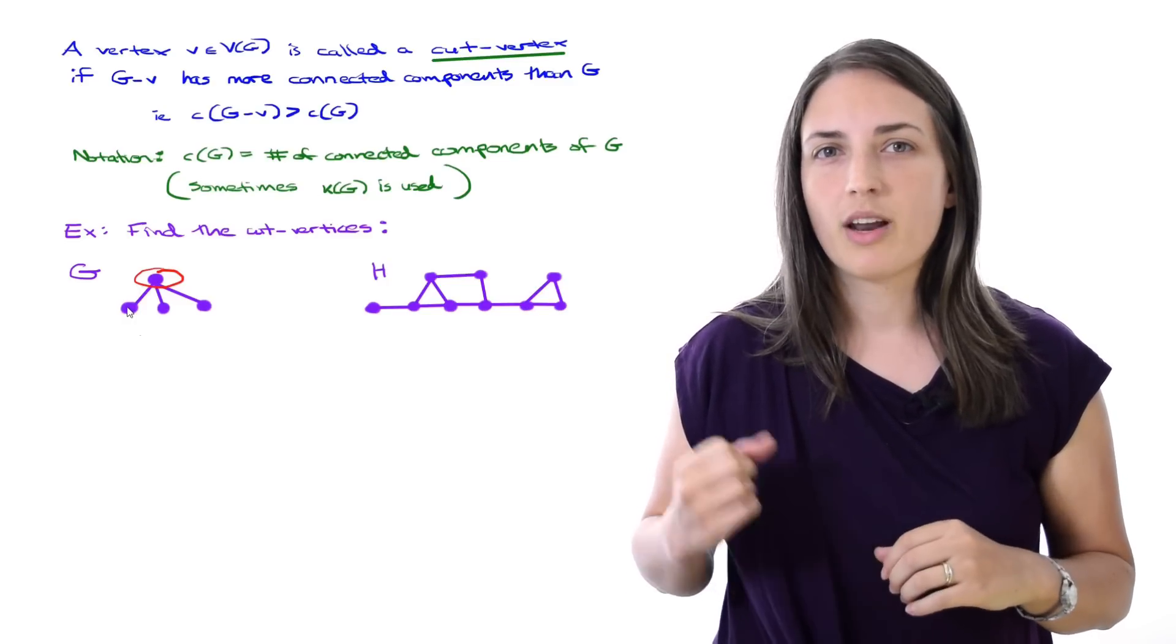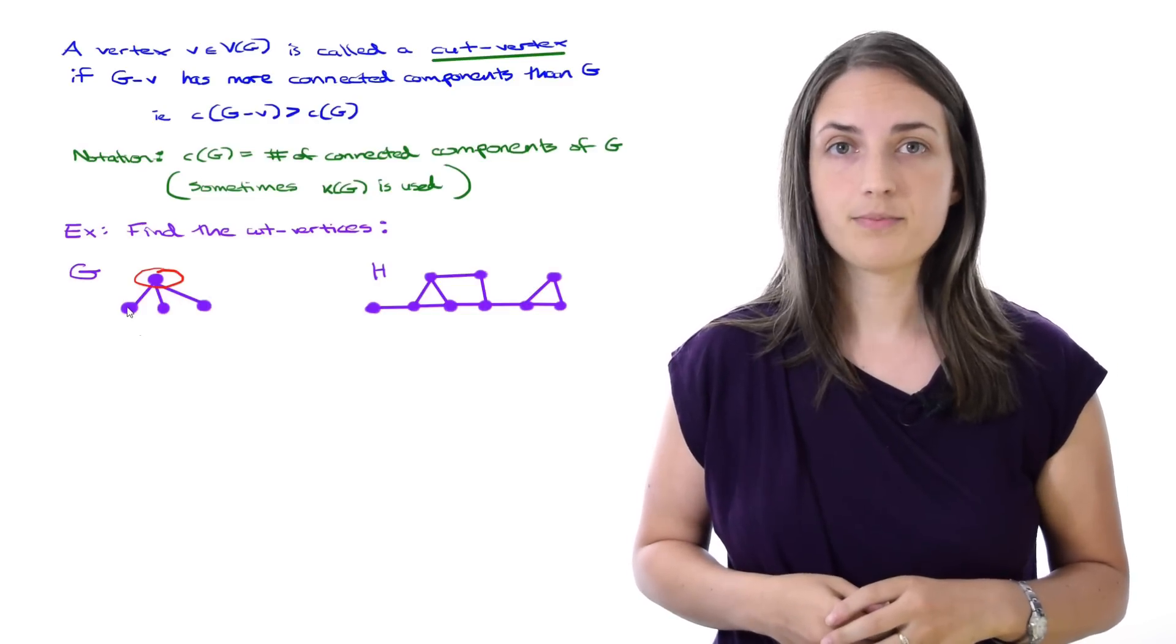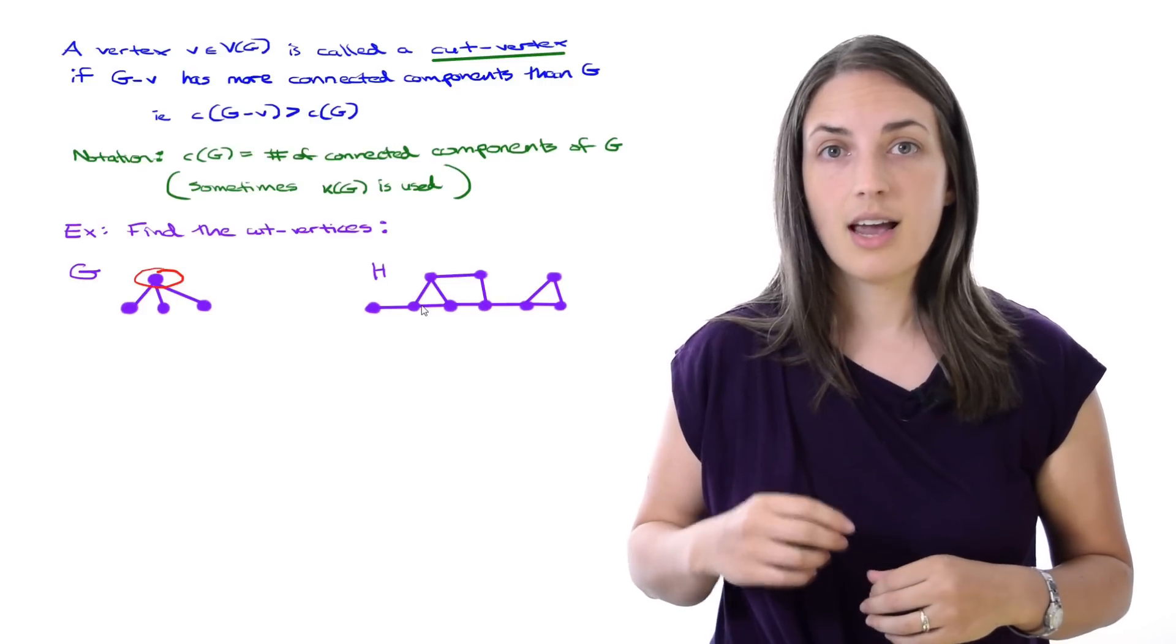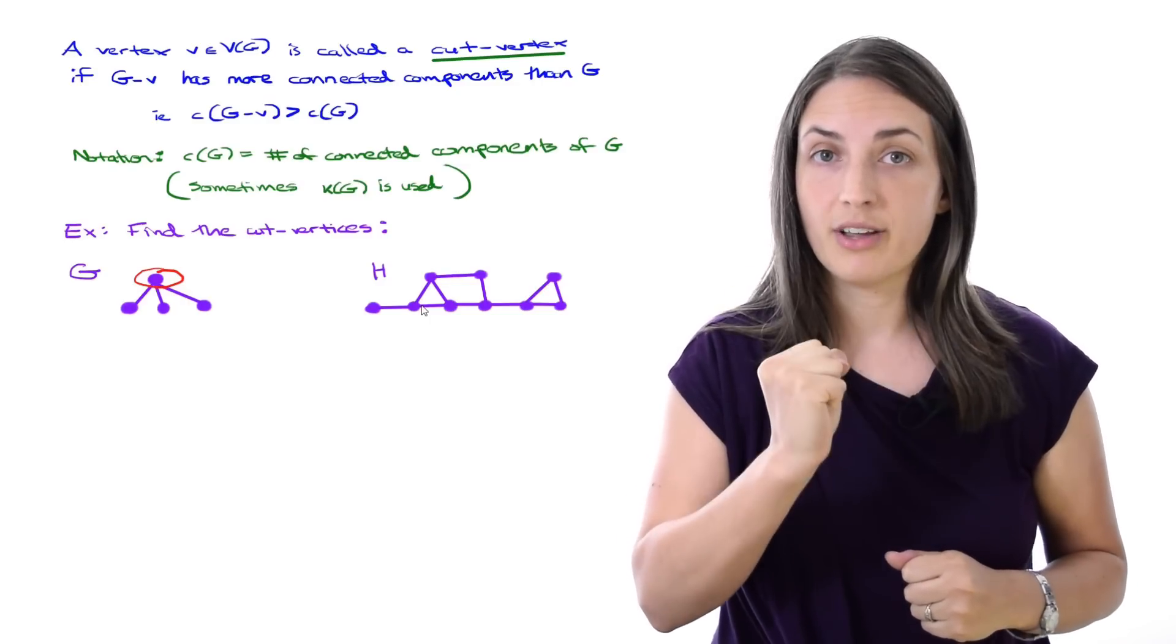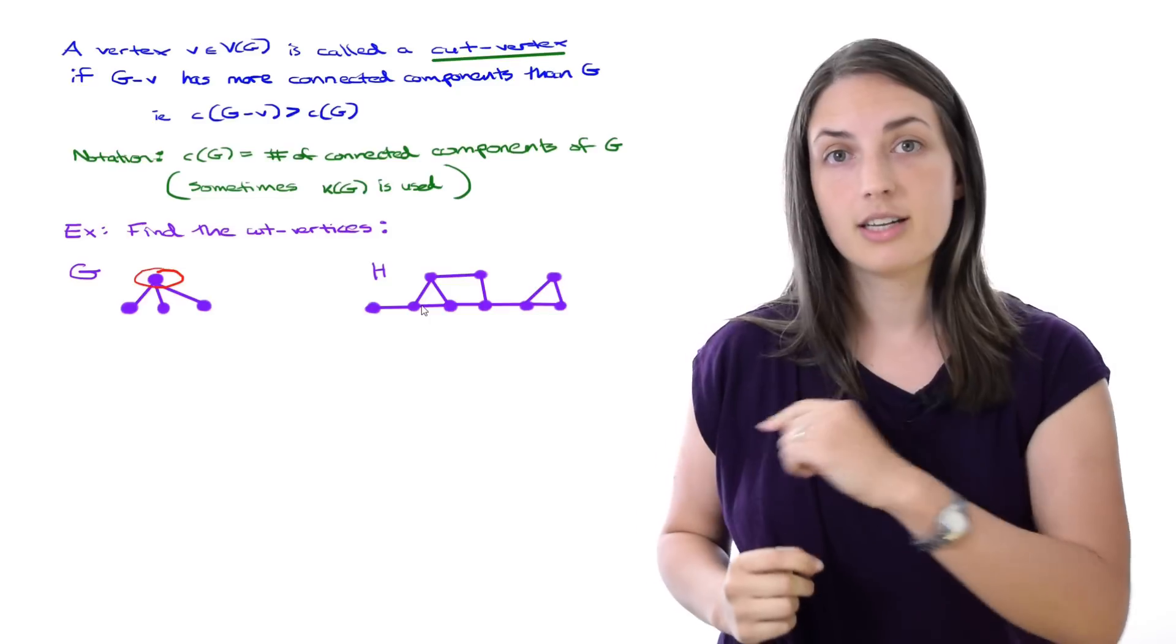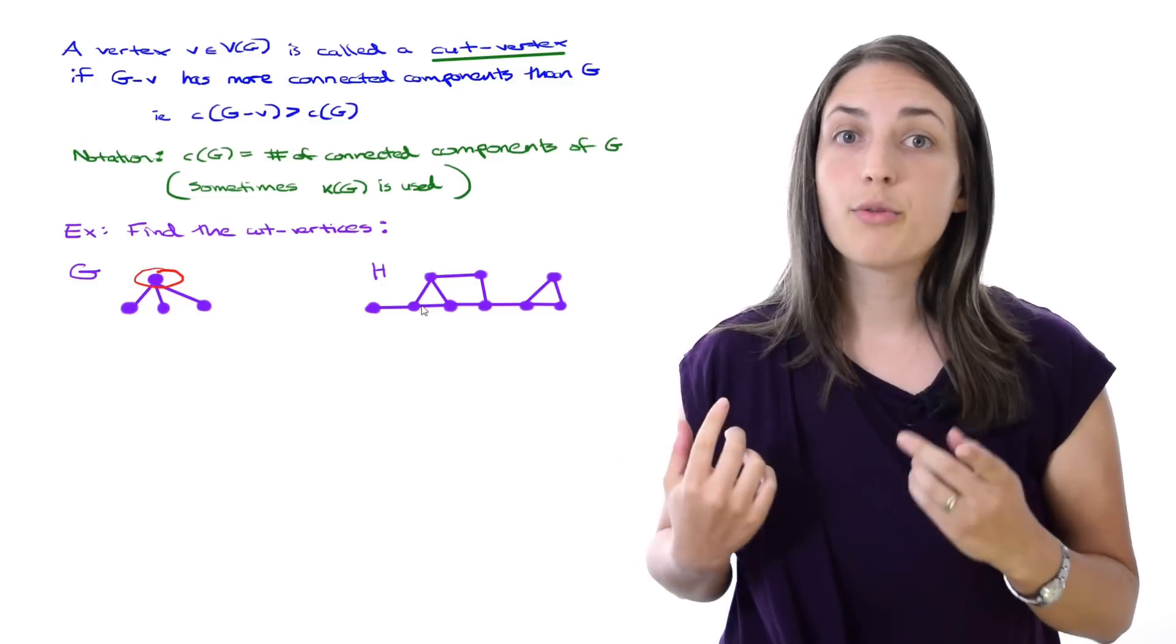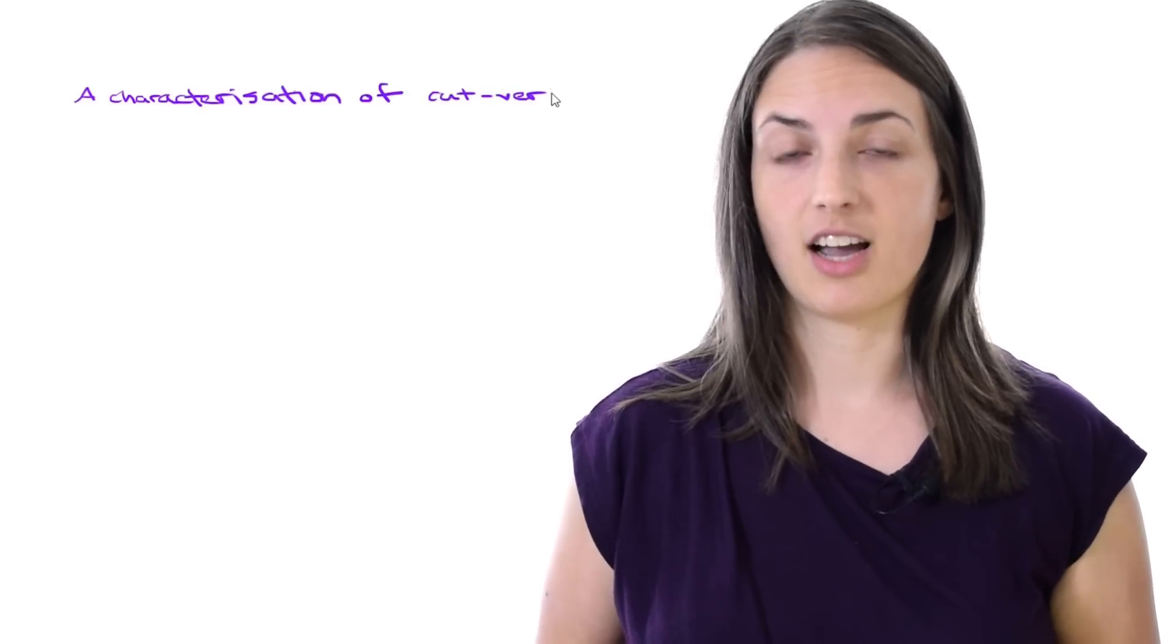If I was to have removed one of the bottom vertices it wouldn't have disconnected the graph. So that's the only cut vertex in it. Now let's take a look at the bigger graph and see if we can find all of the cut vertices. We have to take a look at every vertex and determine that if we were to remove it, would it increase the number of connected components. Currently the graph is connected, so we're asking will it disconnect the graph, and there are only three that will do it. These three highlighted in red. Those are the cut vertices.